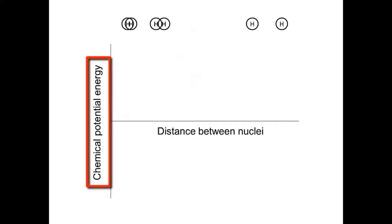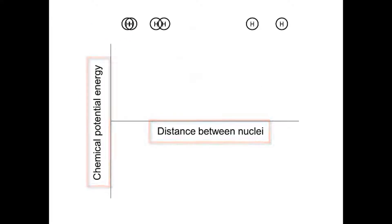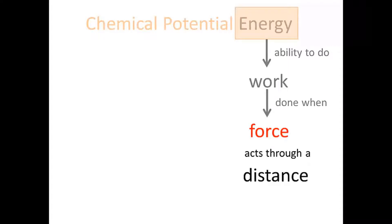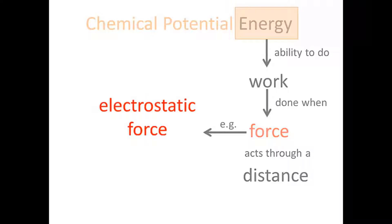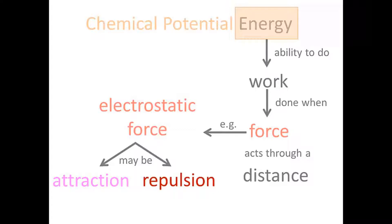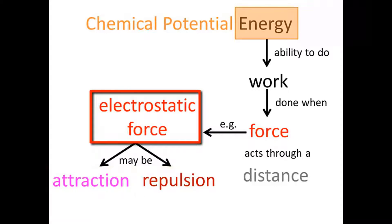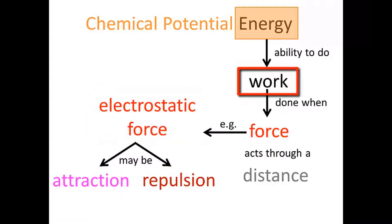Since we're going to plot chemical potential energy against the distance between the nuclei, we need to understand what chemical potential energy is. Any kind of energy is the ability to do work, and work is always done when a force acts through a distance. There are different kinds of force, and one of them is electrostatic force. Electrostatic force might be attraction or repulsion. Attraction occurs between opposite charges — positive and negative attract — and repulsion occurs between like charges. If there is a net attraction or repulsion between two objects, then they will exert electrostatic forces on one another, and so they can do work on one another if they are free to move through a distance.